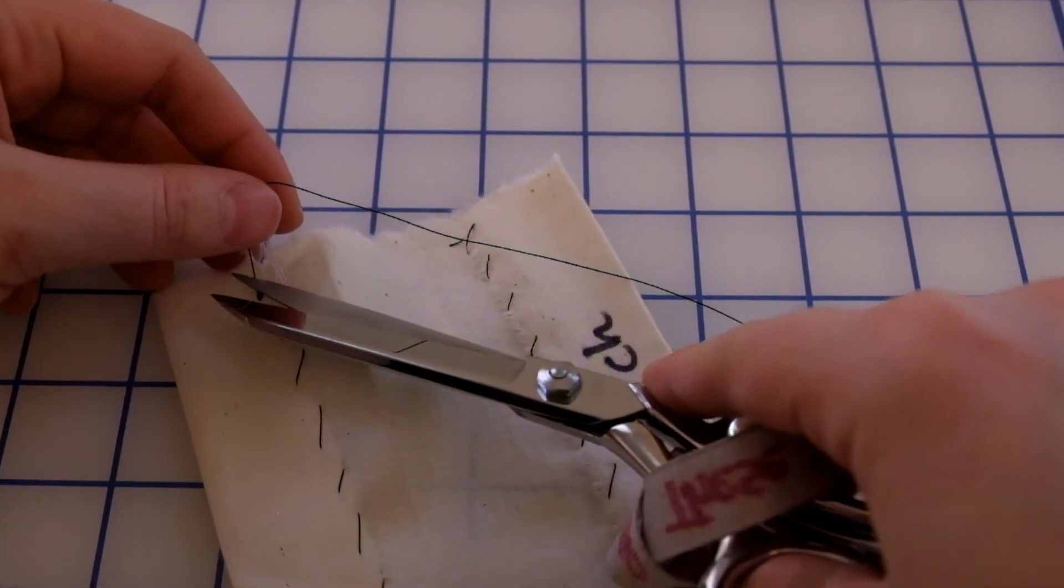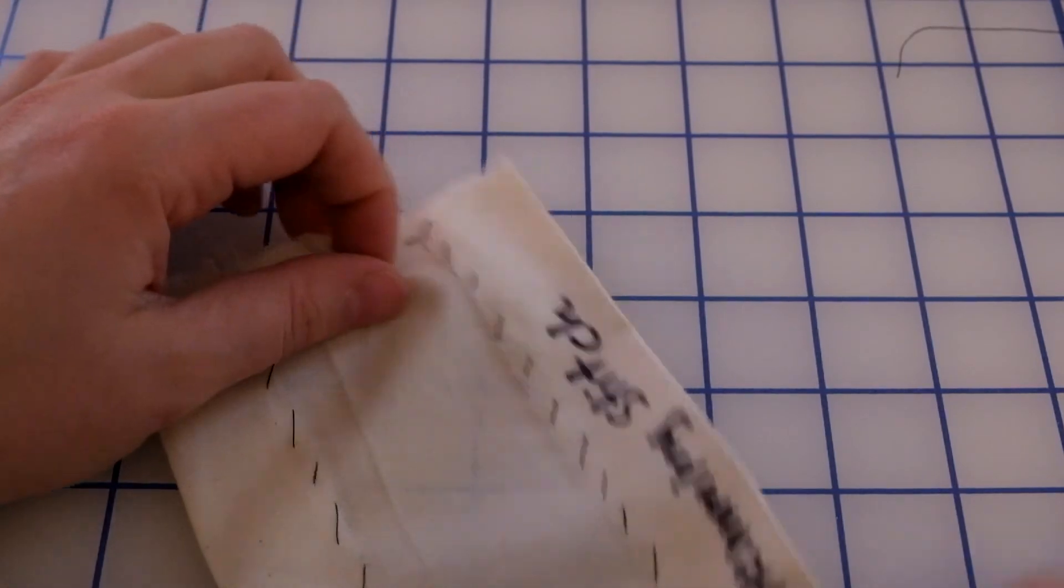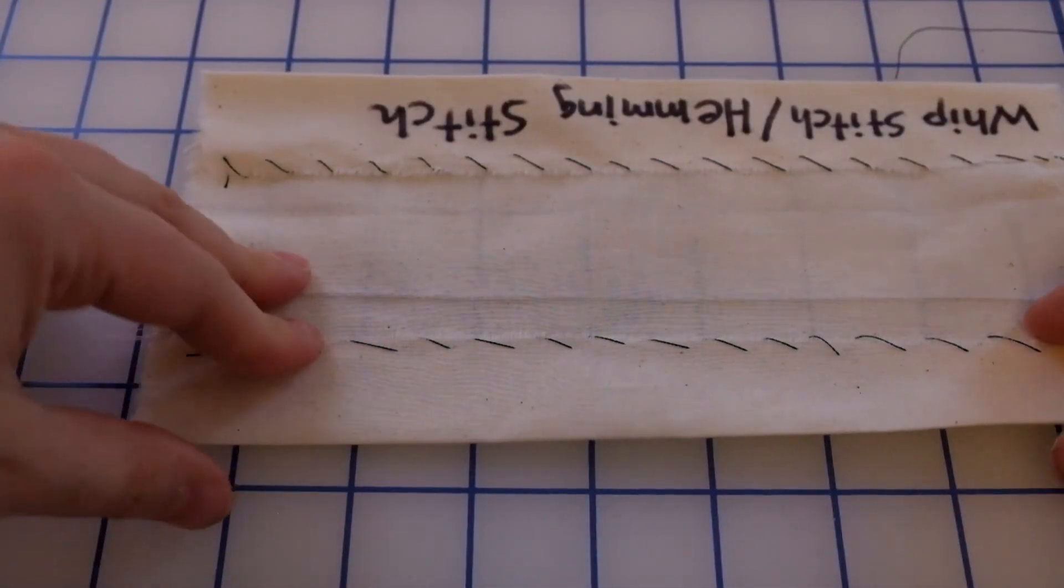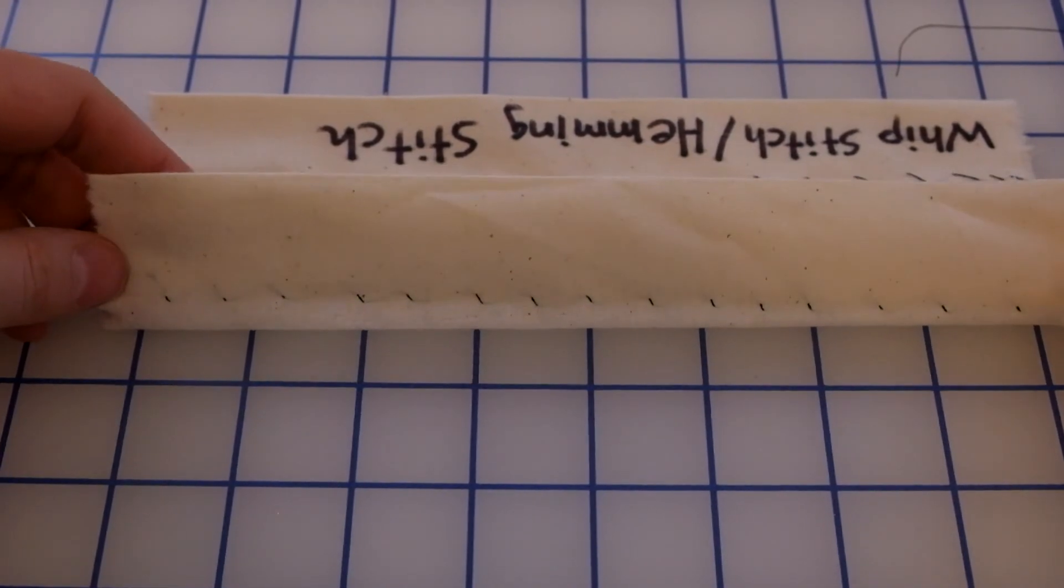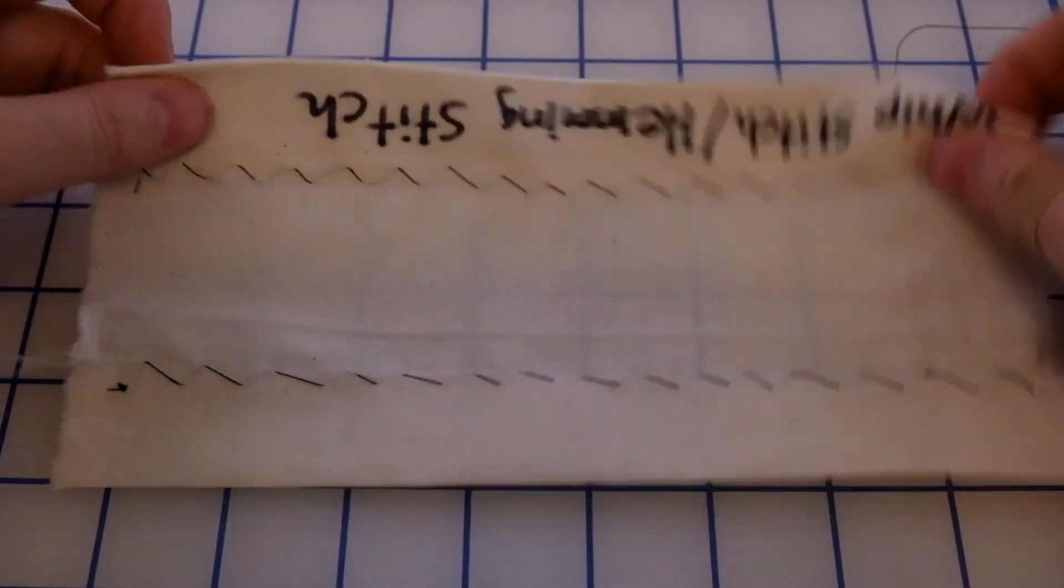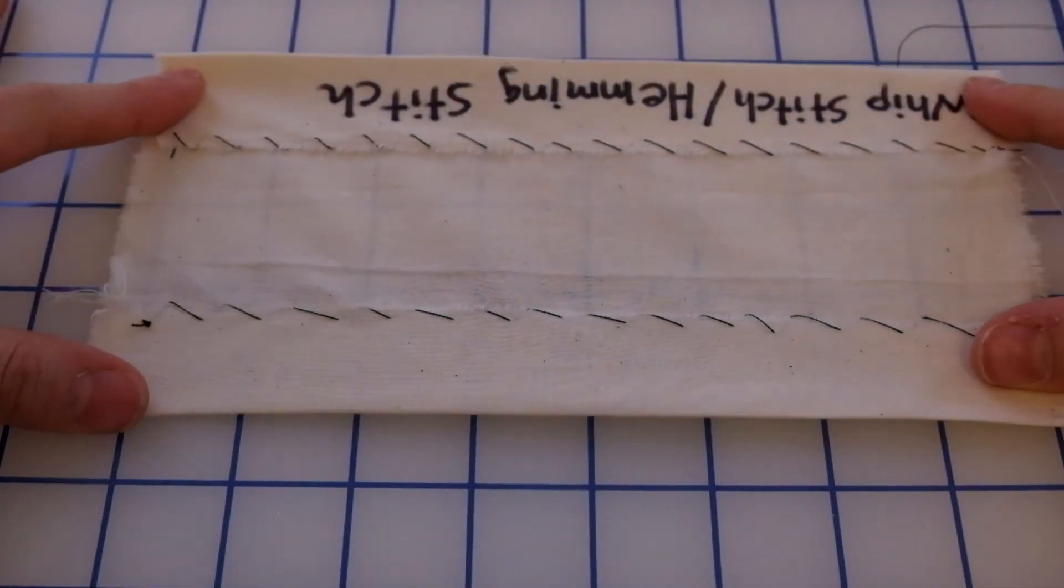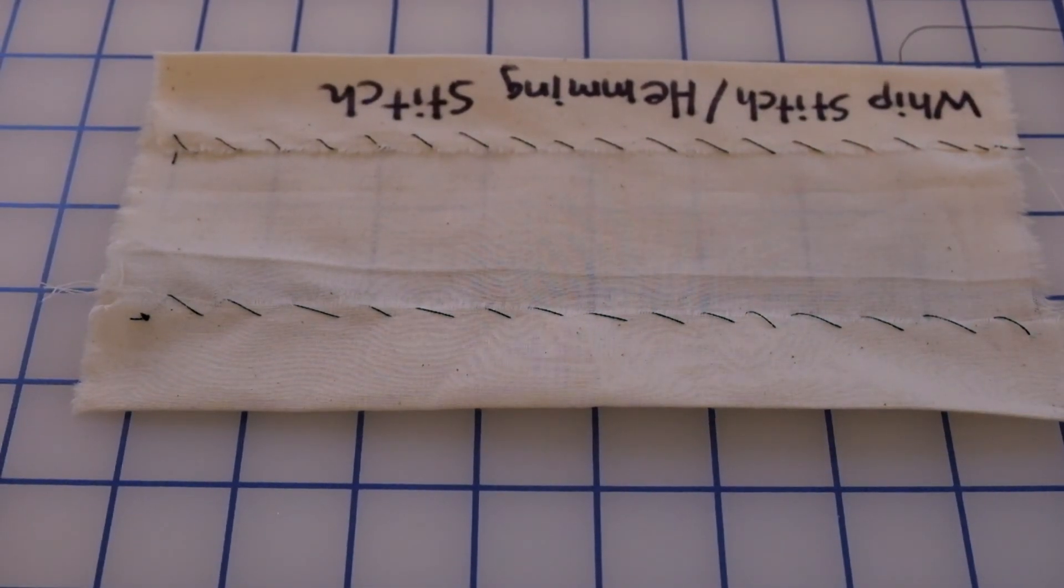Then you can just trim that, and you can see the hemming stitch. You can see the stitches on the back are pretty small, and that is how you do the hemming stitch.